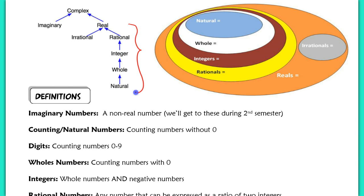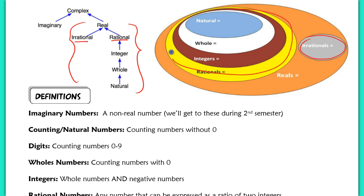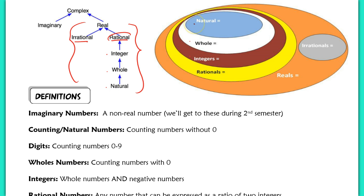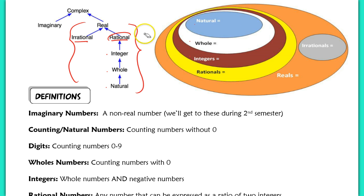Looking at the Venn diagram, real numbers are broken down into irrational or rational numbers. Within the set of rational numbers, you've got integers, whole numbers, and natural numbers. Just like a Venn diagram works, natural numbers are also considered whole numbers, but not every whole number is a natural number. Refer back to this diagram as we go through the vocabulary terms.